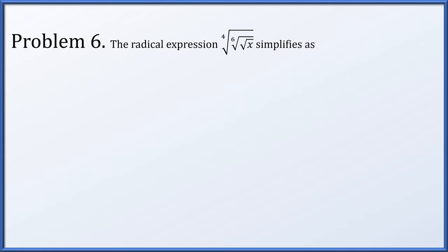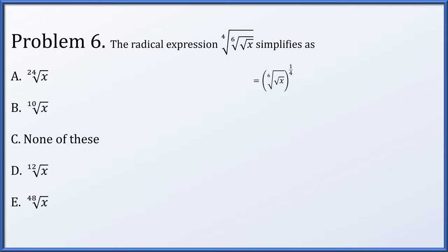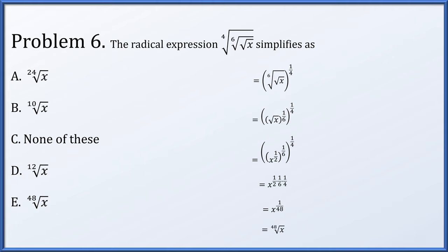In problem 6, the 4th root of the 6th root of the square root of x simplifies how? The 4th root is the 1/4 power, the 6th root is the 1/6 power, and the square root is the 1/2 power. So we have x to the 1/2, all raised to the 1/6, all raised to the 1/4. When you have exponents stacked like this, the exponents multiply: x to the 1/2 times 1/6 times 1/4, which is x to the 1 over 48 — that's the 48th root of x, exactly option E.